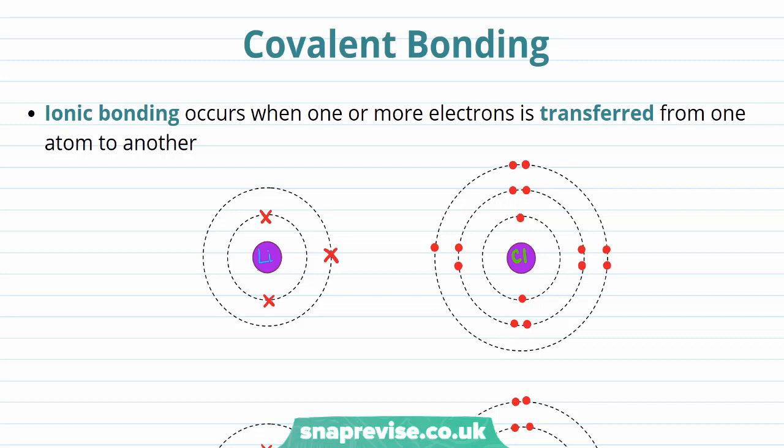If you've watched our videos on ions, you'll know that ionic bonding occurs when one or more electrons is transferred from one atom to another. Specifically, one or more electrons is transferred from a metal to a non-metal. In this diagram, on the left hand side, we have an atom of lithium with its three electrons shown, two in the inner shell and one in the outer shell.